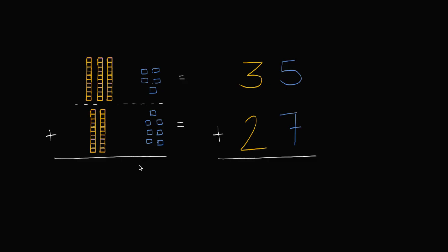So I have five ones here, I have seven ones here. So if I add five ones to seven ones, how many ones am I going to get? I'm going to get 12 ones — one, two, three, four, five, six, seven, eight, nine, ten, eleven, and twelve. Now you might notice a problem here. Because if I take five plus seven, I can't write the number twelve in just the ones place. I just need to have one digit; I can't have two digits there.